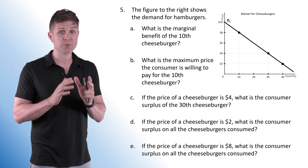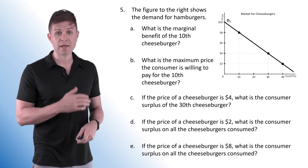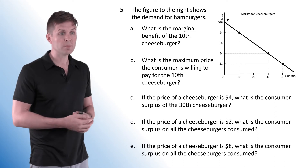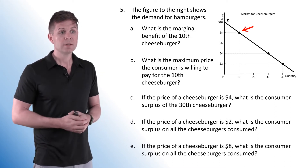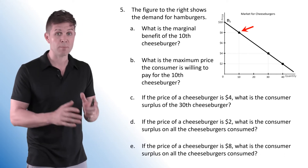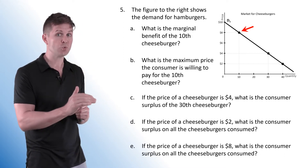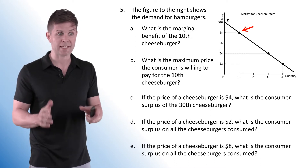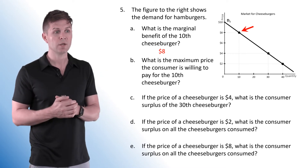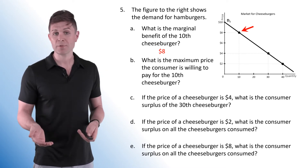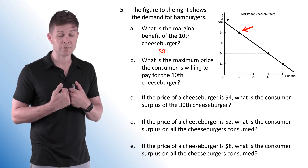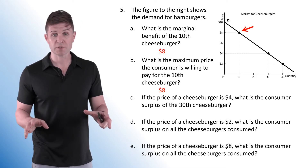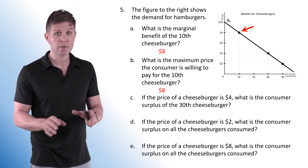For number five, we're focusing on consumer surplus. We have a downward sloping demand curve in the market for cheeseburgers. Question A asks: what is the marginal benefit of the 10th cheeseburger? The 10th cheeseburger is purchased at $8, so the marginal buyer comes in as the price goes down to $8 — his marginal benefit is exactly $8. Question B: what is the maximum price the consumer is willing to pay for the 10th cheeseburger? Because he gets $8 in satisfaction, he is only willing to pay $8, not a penny more.